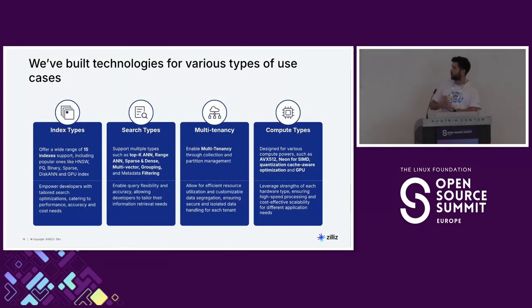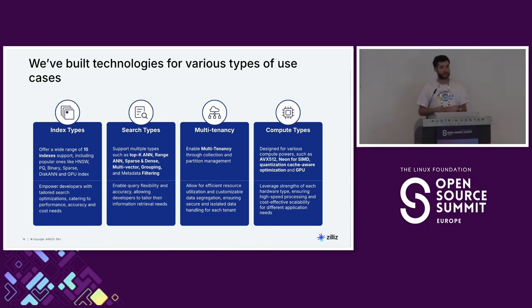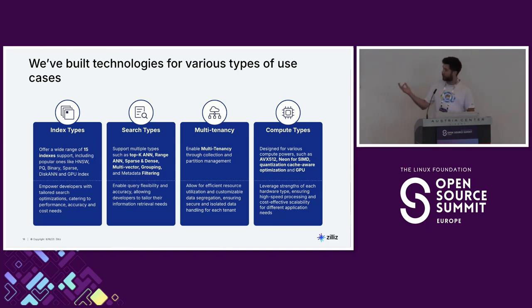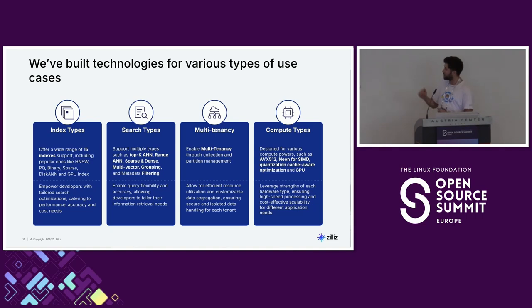We have different index types. Most people talk about HNSW, which runs everything in memory — that's great but can be costly. We also support disk-based indexes like DiskANN, which runs on disk. We also support GPU indexes with NVIDIA directly. We support different search types — not only dense search, but also metadata filtering, grouping, and multiple vector search simultaneously. We also have compute optimizations with Intel for specific Intel CPUs.